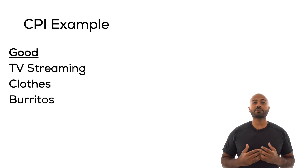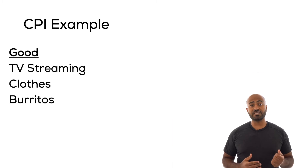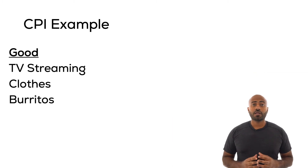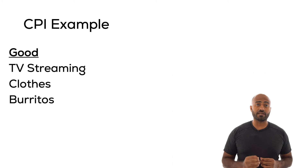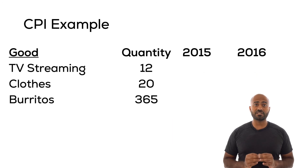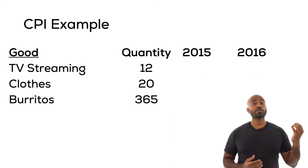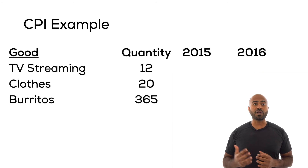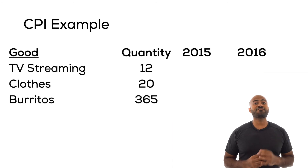Now that you know how the BLS selects the basket of goods, let's see how they use it to calculate CPI and eventually inflation. In this example, we will simplify our products from 8,000 to just 3. Let's assume the average consumer basket has the following goods: TV streaming service, clothing, and burritos. We only have two years of data: 2015 and 2016. The basket includes 12 units of TV streaming, 20 units of clothing, and 365 units of burritos.